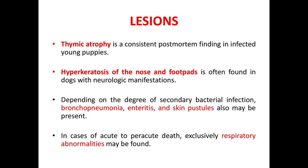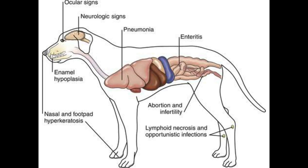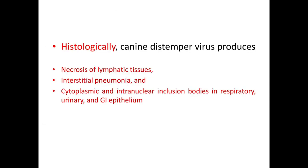Thymic atrophy is the consistent post-mortem finding in infected young puppies. Hyperkeratosis of the nose and foot pads is often found with neurologic manifestations. Depending on the degree of secondary bacterial infection, bronchopneumonia, arthritis, and skin pustules are seen; in cases of acute to peracute death, exclusively respiratory abnormalities may be found. A broad range of lesions caused by CDV includes ocular signs, neurologic signs, pneumonia, enteritis, abortion and infertility, lymphoid necrosis, opportunistic infection, nasal and foot pad hyperkeratosis, and enamel hypoplasia.